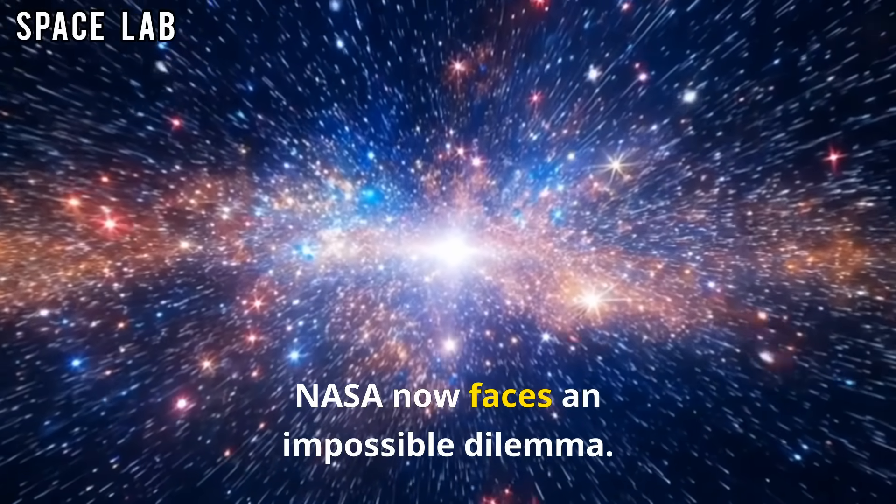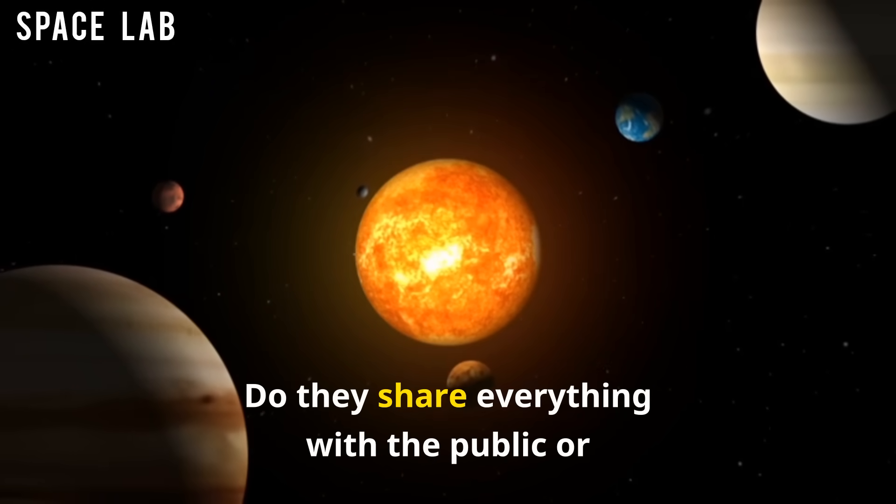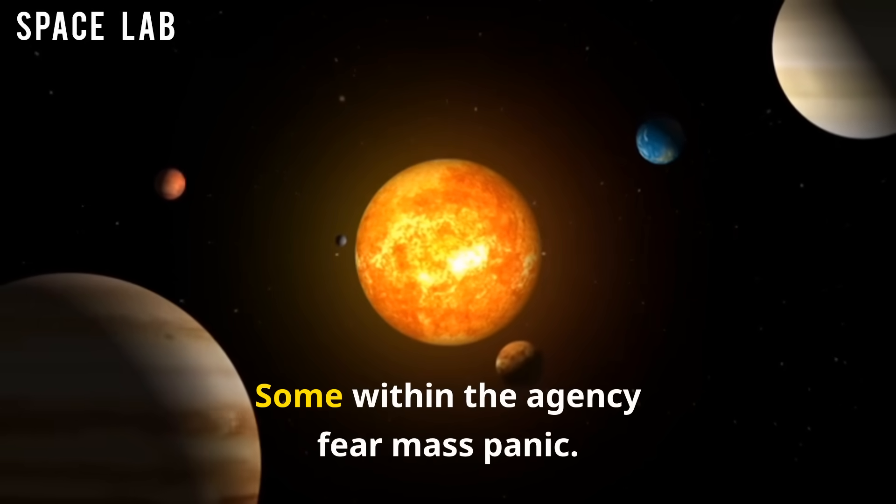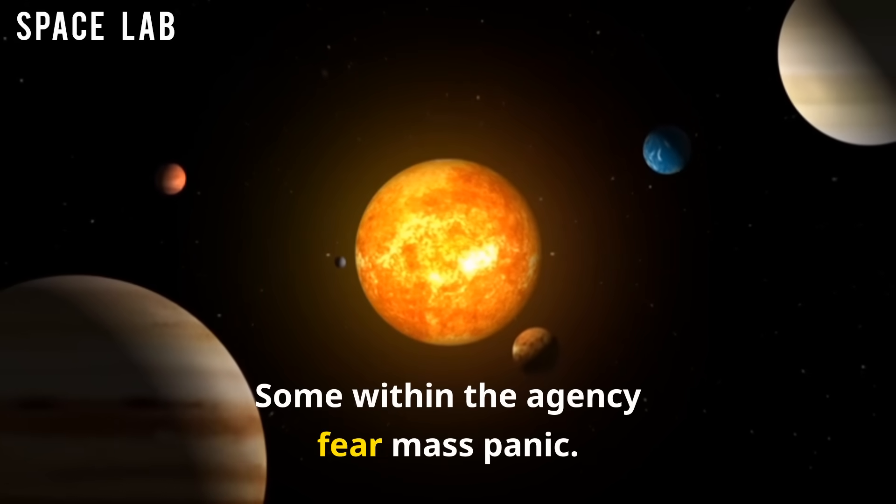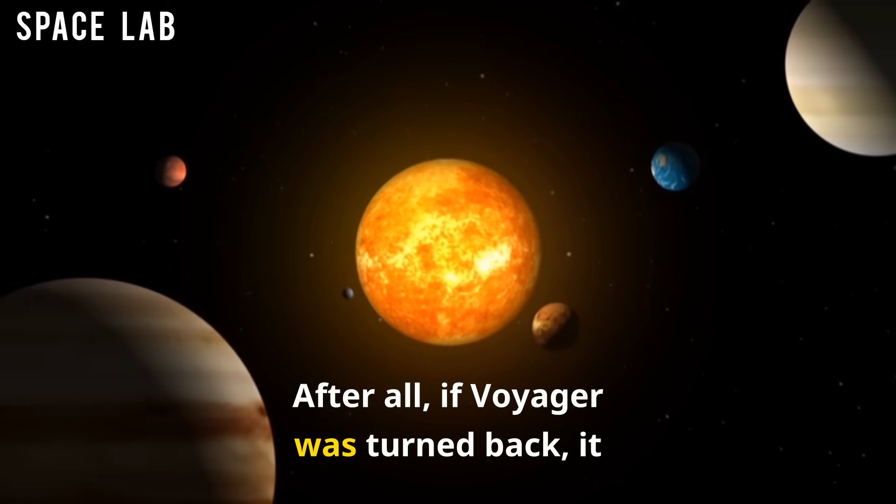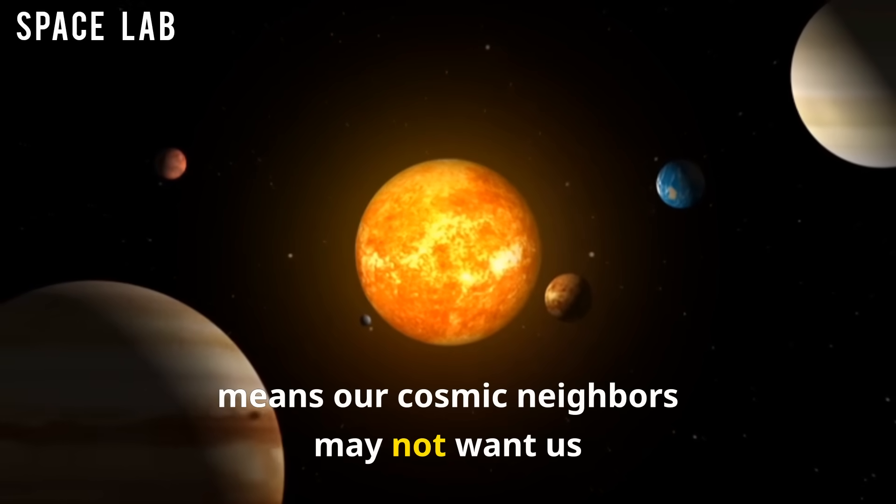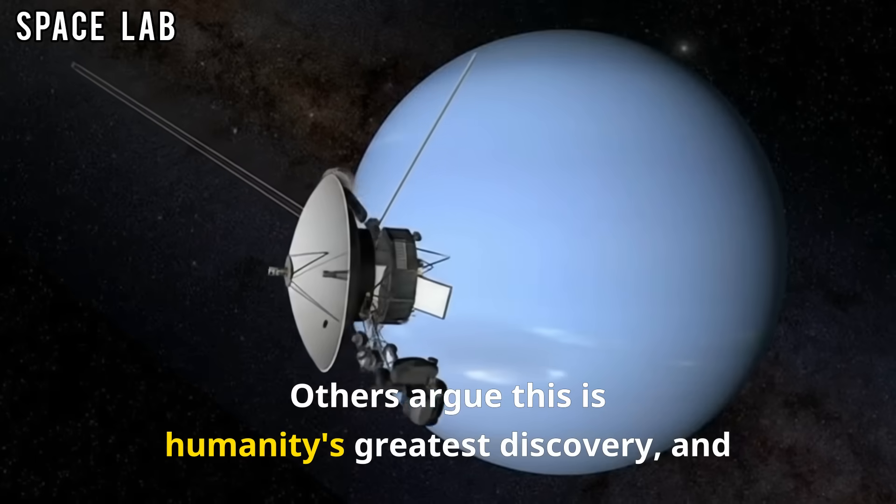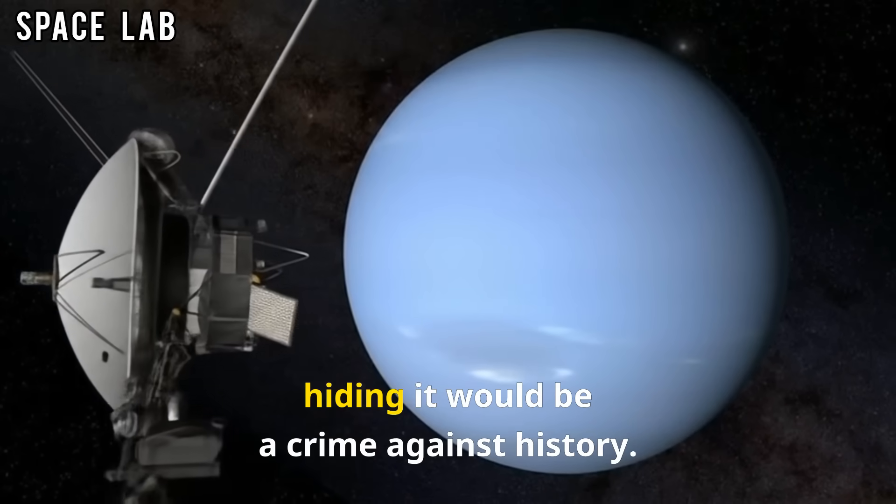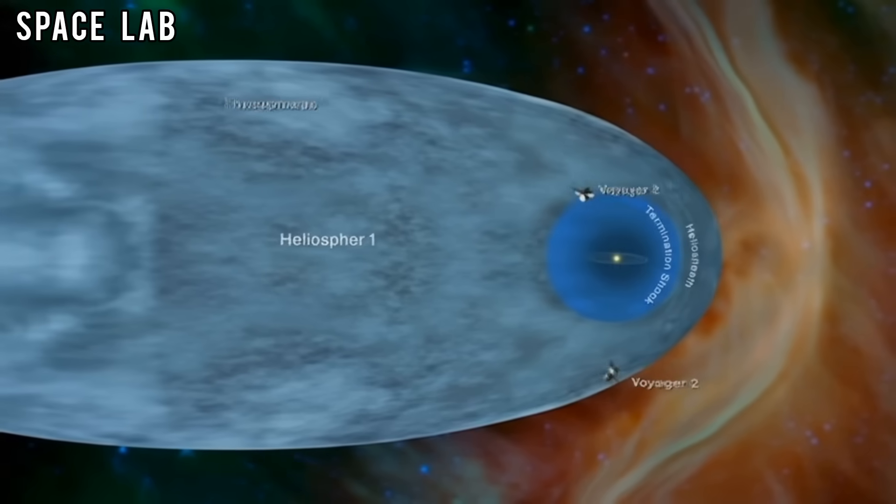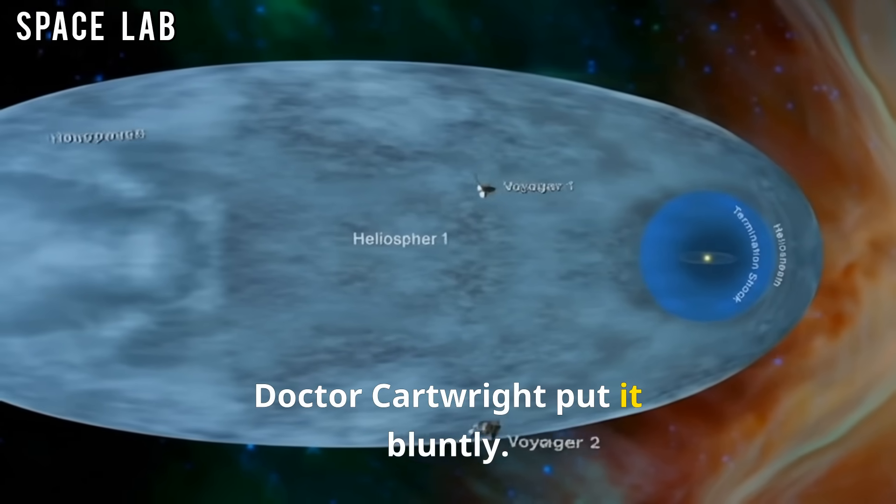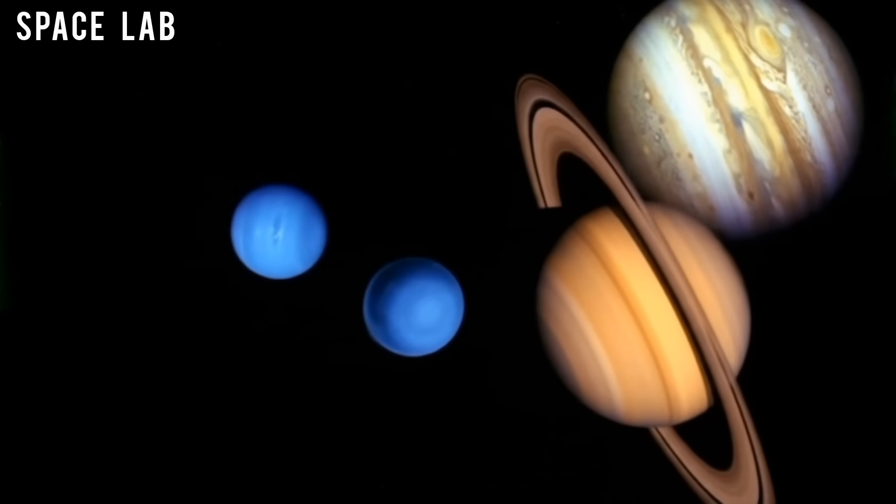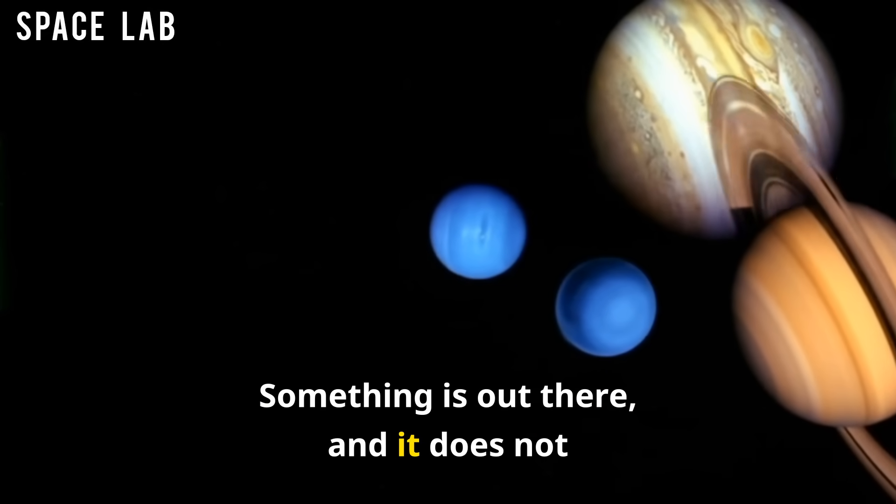Voyager's turn back is that evidence. NASA now faces an impossible dilemma. Do they share everything with the public, or keep it hidden until they understand more? Some within the agency fear mass panic. After all, if Voyager was turned back, it means our cosmic neighbors may not want us exploring further. Others argue this is humanity's greatest discovery, and hiding it would be a crime against history. Dr. Cartwright put it bluntly: Voyager confirms that interstellar space is not empty. Something is out there, and it does not work.